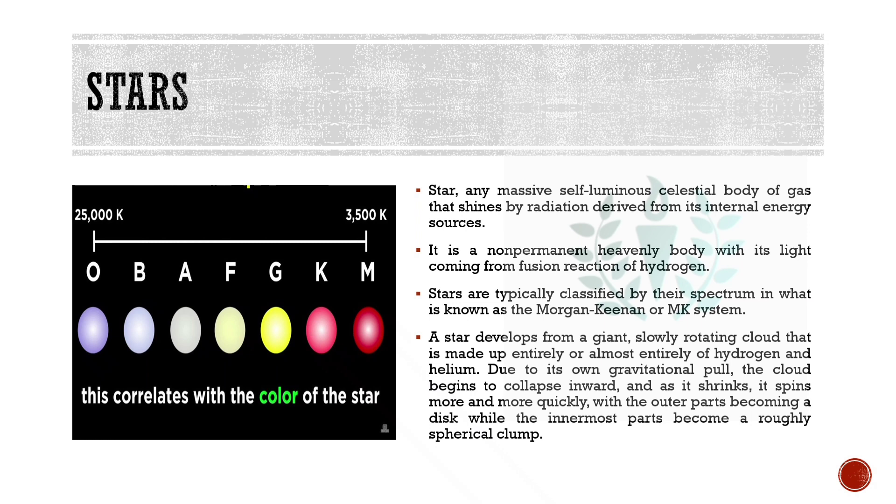Stars develop from a giant slowly rotating cloud that is made up entirely of mostly hydrogen and helium. Some traces of other elements might also be present. Due to its own gravitational pull, the cloud begins to collapse inward. And since it collapses, its size shrinks and it spins more and more quickly. This causes the outer parts to become a disc while the innermost parts become roughly spherical and clump.